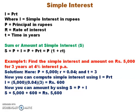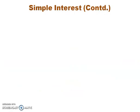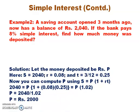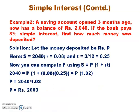Let us take another example. A savings account opened 3 months ago now has a balance of rupees 2040. If the bank pays 8% simple interest, find how much money was deposited. Here, you are not given the principal, so assume money deposited is rupees P. You are given S equals 2040, R equals 0.08, and T equals 3 divided by 12, which comes to 0.25, since the time period of 3 months is converted into years by dividing by 12.